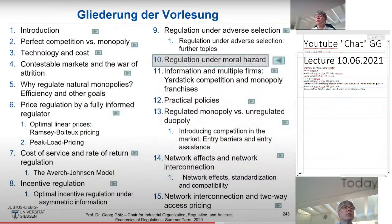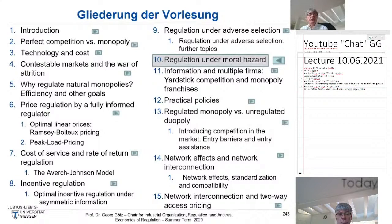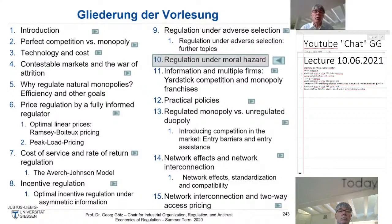Before I move on, I want to reiterate that this is really hard material. I do not expect you to understand it immediately — it should become clear once you go over it again and especially once you solve the problem set. This also holds for the next chapter: regulation under moral hazard, the second type of asymmetric information problem, which draws on the handbook article by Mark Armstrong and David Sappington in the Handbook of Industrial Organization.